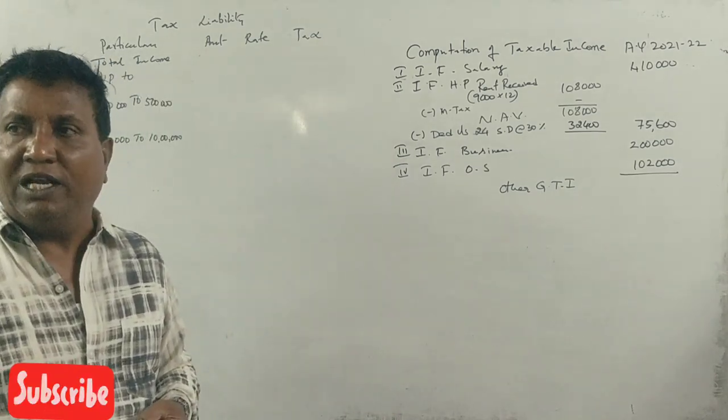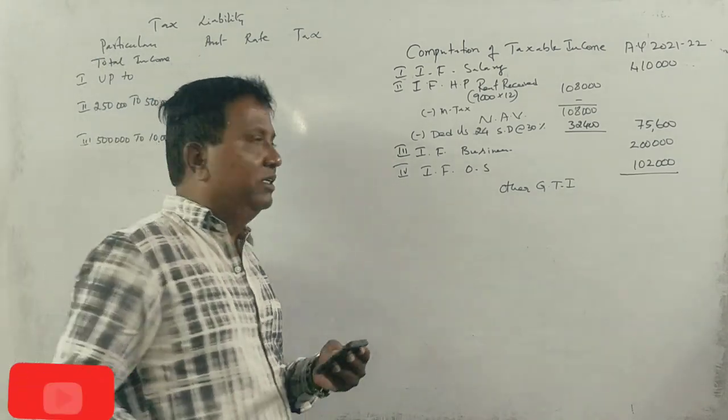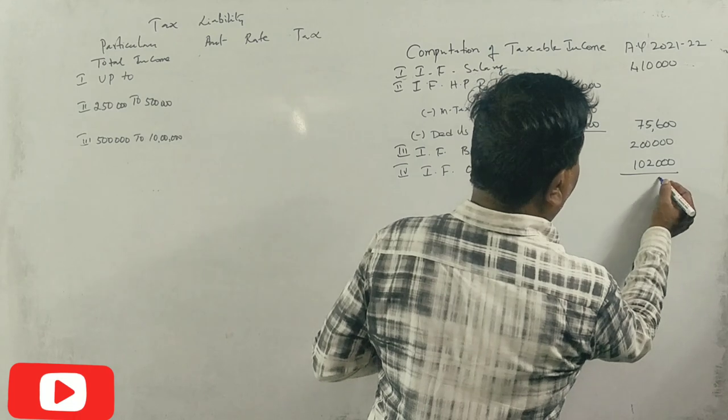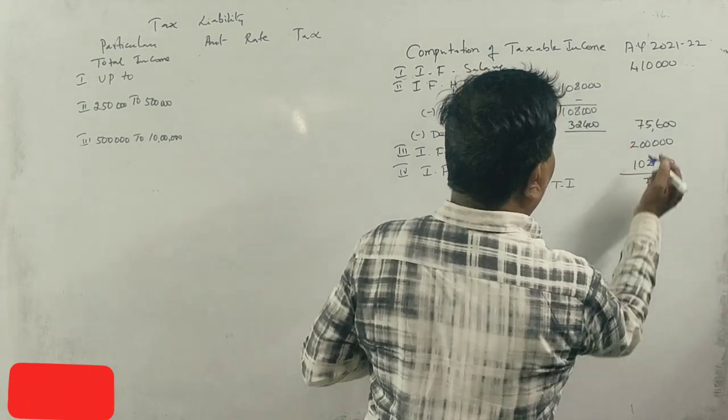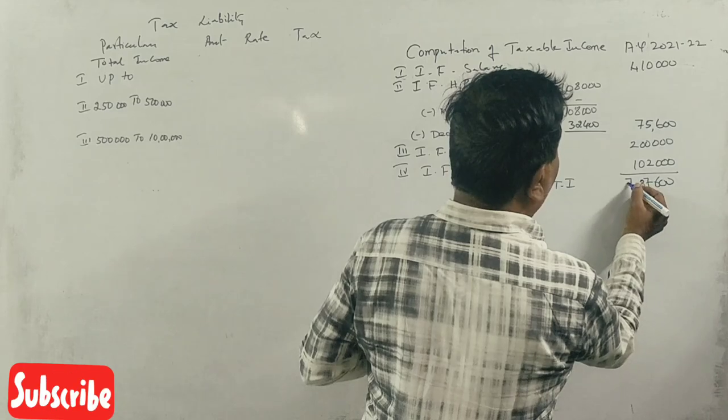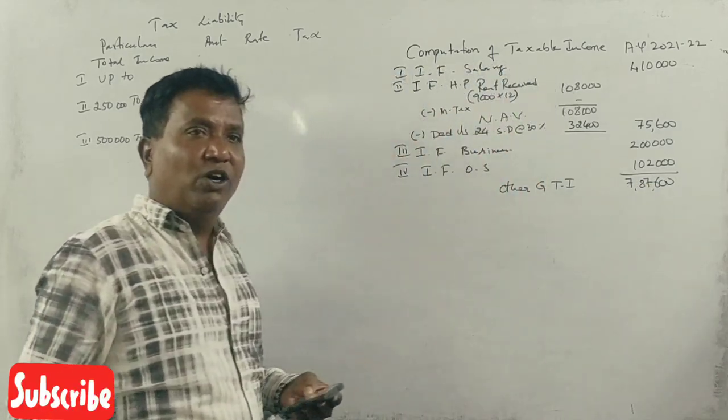Next, total gross total income. Income from salary, income from house property, income from business.